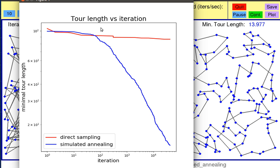We see that the tour length for direct sampling basically stays flat — it very very slowly decreases. So direct sampling is not a good method to solve the TSP problem. We also see that the simulated annealing continuously improves the solution. Please note that this is a log-log plot, so both axes are logarithmic in scale.